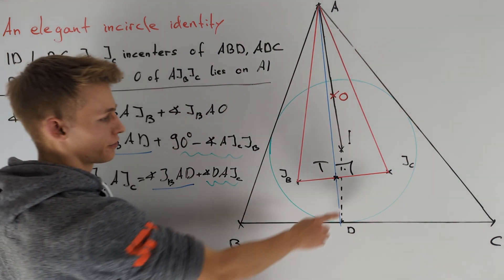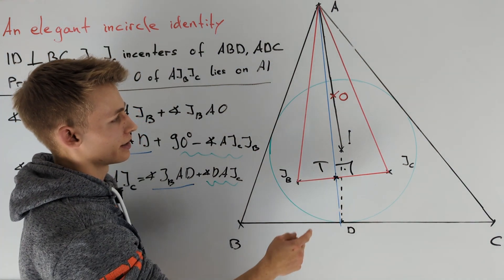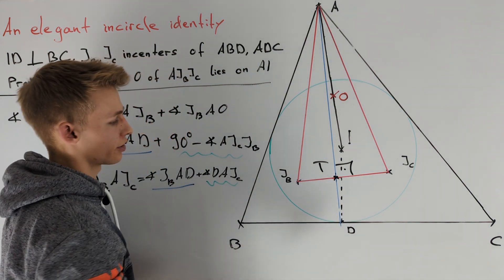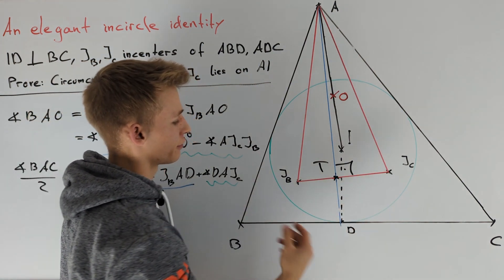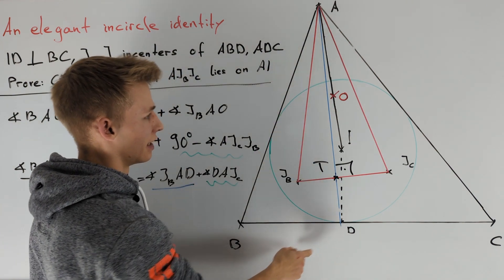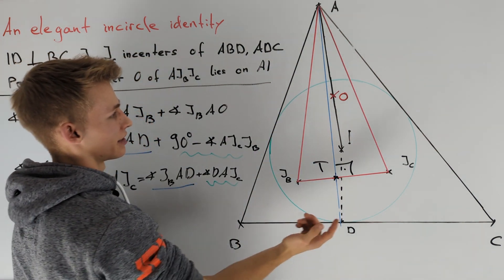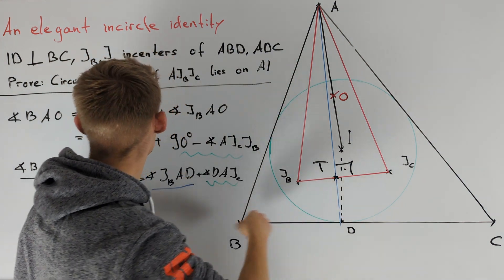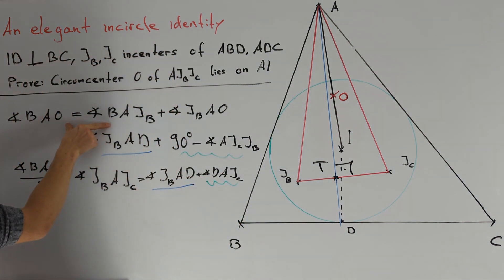Moreover, if we prove this right angle, triangle AJBJC is acute because JB and JC lie on different sides of AD. This implies the circumcenter O lies inside triangle AJBJC, confirming our equation is true.